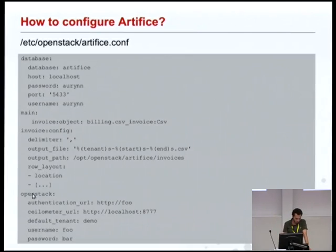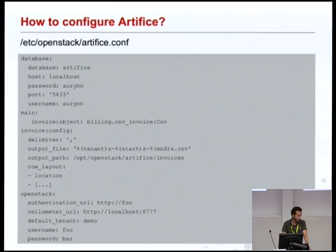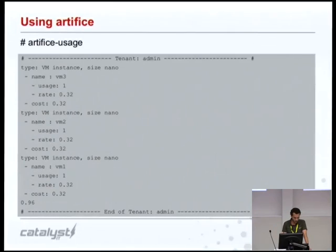Finally, you have the OpenStack part of the configuration, where you have the authentication URL for Keystone and your user credentials. At the moment, you still have the Ceilometer endpoint there, but in the future that should come just from the Keystone catalog — so that's something I will change.